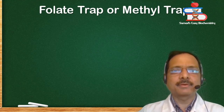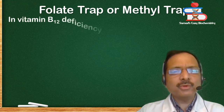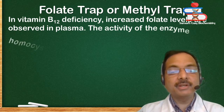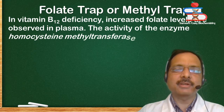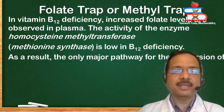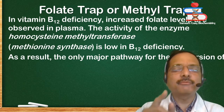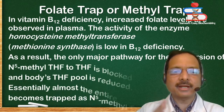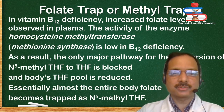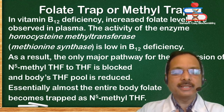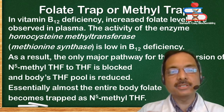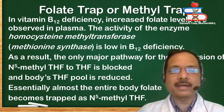Folate Trap. In vitamin B12 deficiency, increased folate levels are observed in plasma. The activity of the enzyme homocysteine methyltransferase (methionine synthase) is low in B12 deficiency. As a result, the only major pathway for conversion of N5-methyl tetrahydrofolate to tetrahydrofolate is blocked, and the body's tetrahydrofolate pool is reduced. Almost the entire body folate becomes trapped as N5-methyl tetrahydrofolate — hence the condition is known as the folate trap or methyl trap.